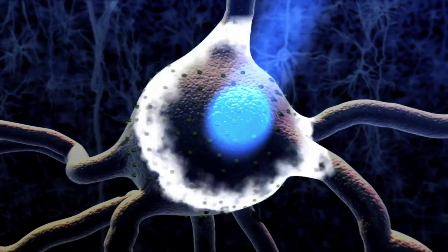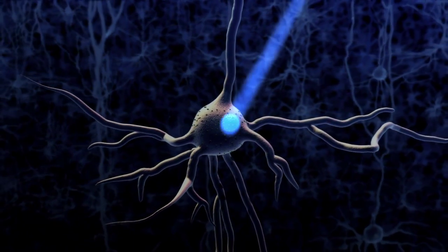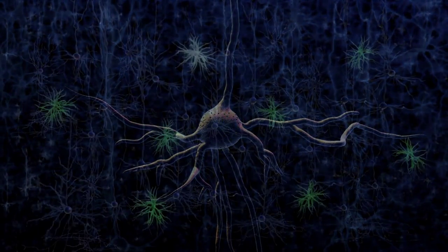This technique, called optogenetics, allows researchers to drive the activity of specific neuron types to see how they affect brain activity and behavior.